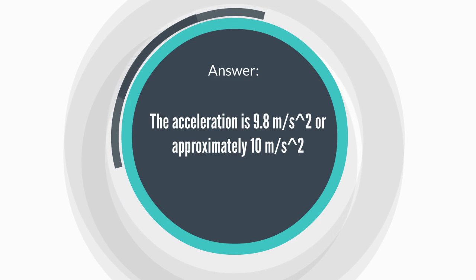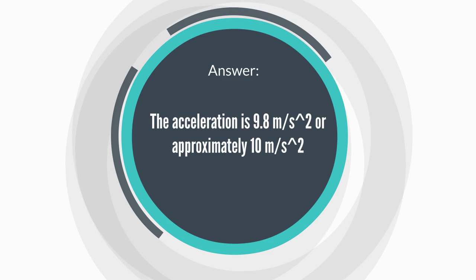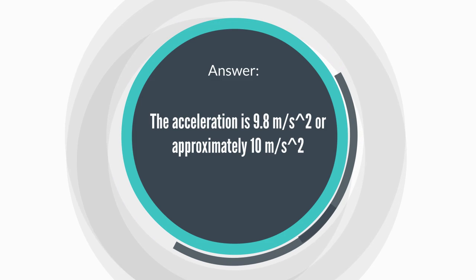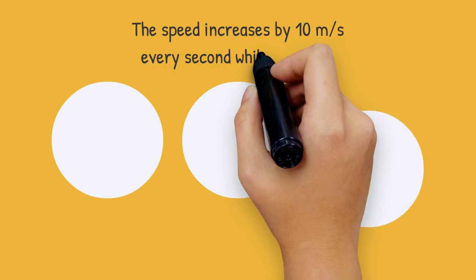So when an object drops from Earth, it will speed up and the velocity will change at the rate of 10 every second. So that means if you drop from rest with zero velocity,